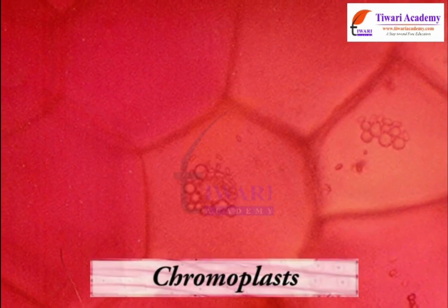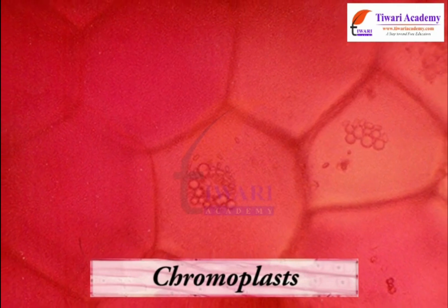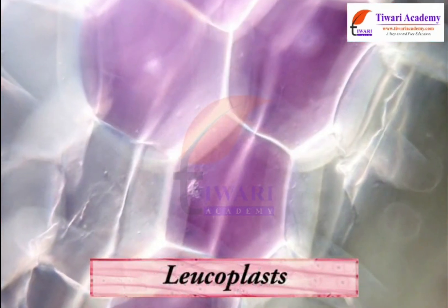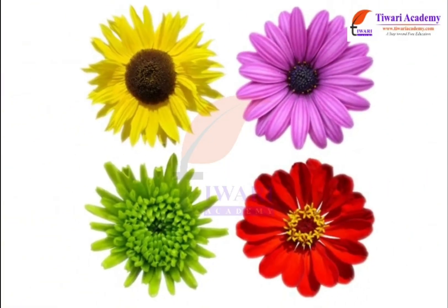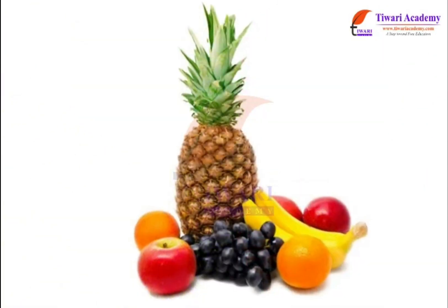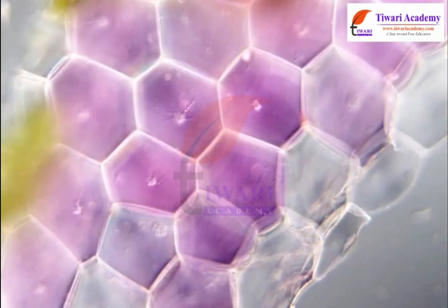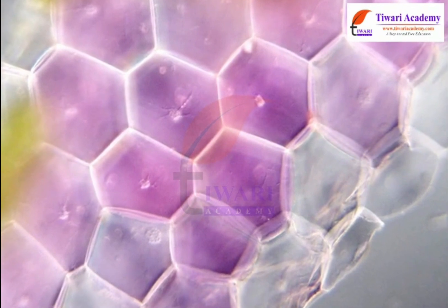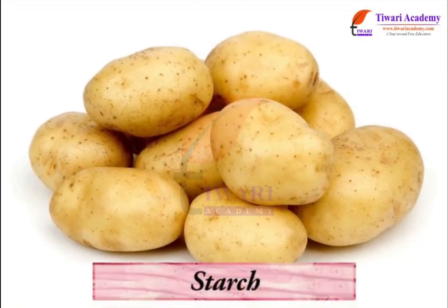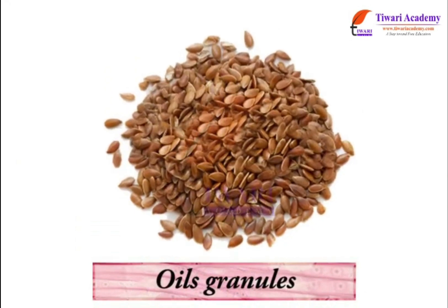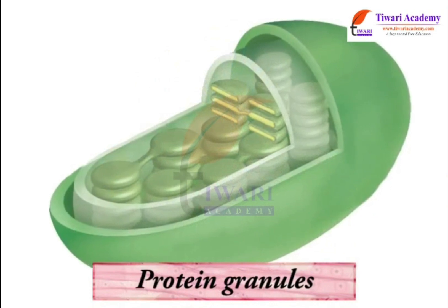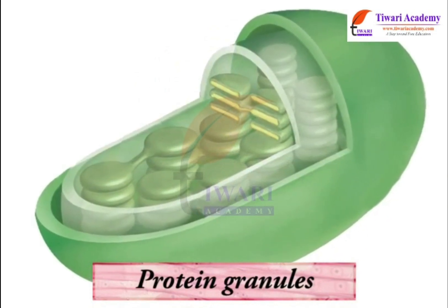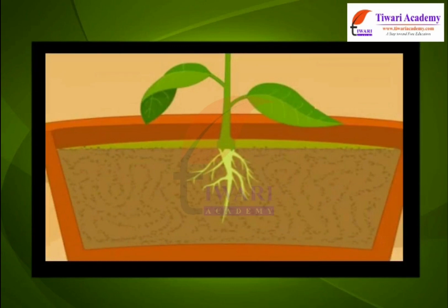There are two types of plastids: chromoplasts, which are colored plastids, and leukoplasts, which are white or colorless plastids. Chromoplasts provide different colors to flowers and fruits. Leukoplasts are colorless plastids that store materials like starch, oils, and protein granules. Chlorophyll-containing plastids are known as chloroplasts, and these are important for photosynthesis in plants.